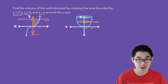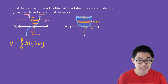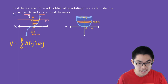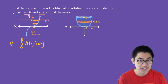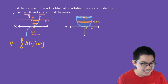To find the volume, we need to write down the volume formula, which is V equals the integral from a to b of A(y) dy. The reason we're integrating with respect to y is because the cross-section, which is a circle, is sitting on the y-axis. The limits from a to b are simply from 0 to 8.